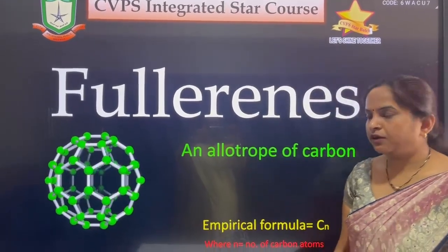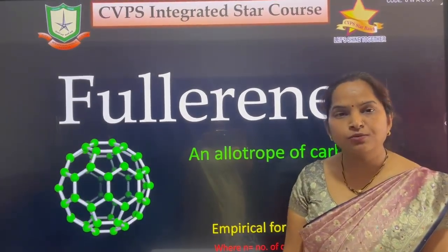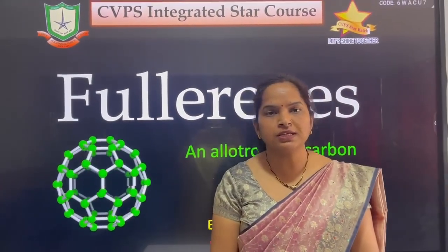The fullerenes have general empirical formula Cn where n is the number of carbon atoms. The smallest fullerene consists of 60 carbon atoms.